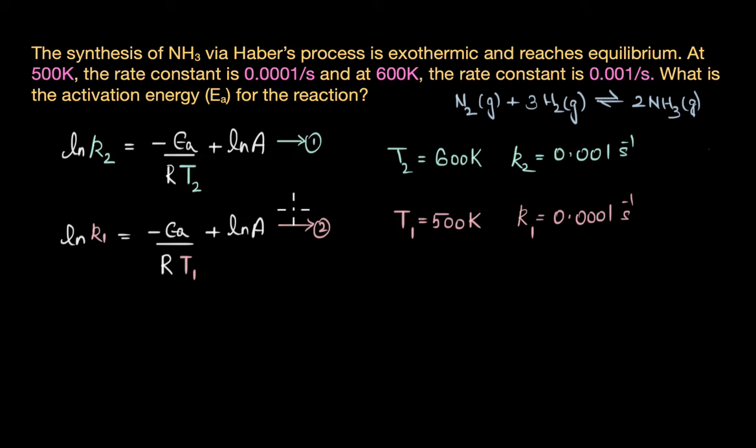When we subtract equation 2 from equation 1, the ln A terms get cancelled because A is constant, especially at narrow temperature range. This gives us ln K2 by K1 equals Ea by R into 1 by T1 minus 1 by T2.